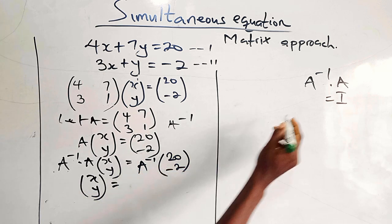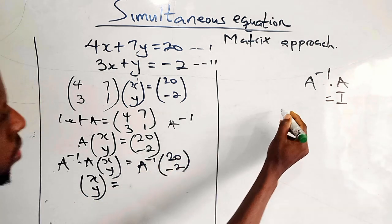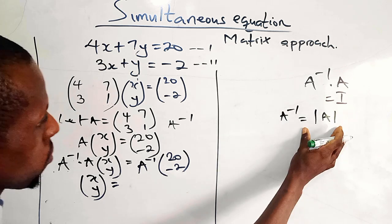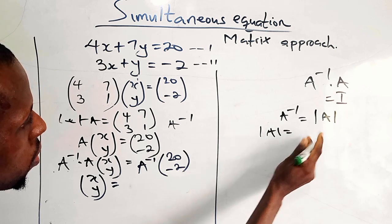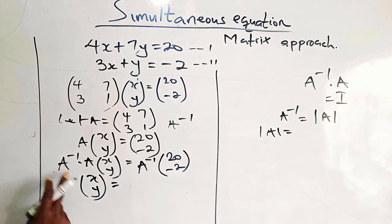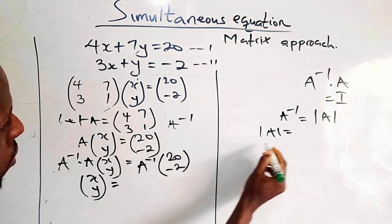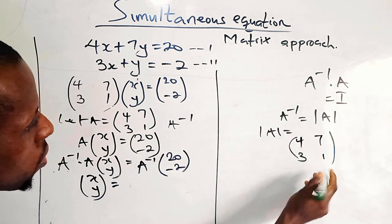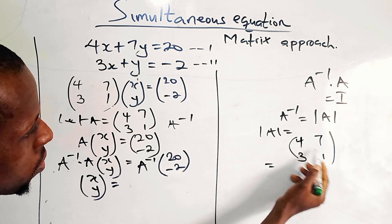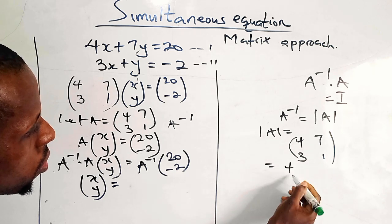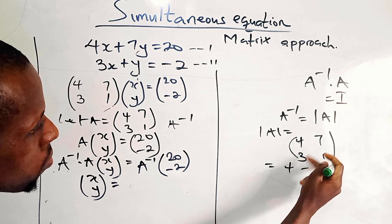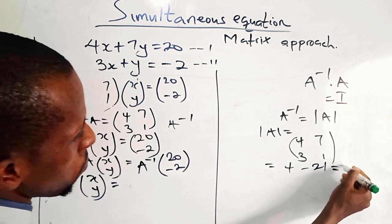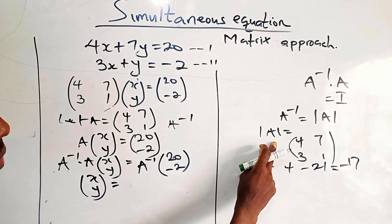To determine the inverse of A, we have to determine the determinant first. A is the matrix with 4, 3, 7, 1. The determinant means multiplying the main diagonal together: 4 times 1 is 4, then subtract the other diagonal: 7 times 3 is 21. So 4 minus 21 gives minus 17. That is the determinant.